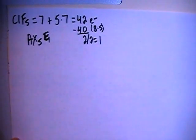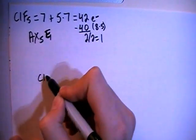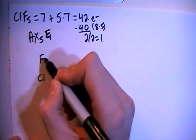Alright, so let's go ahead and draw this structure. So we have the chlorine in the center surrounded by the 5 fluorines.